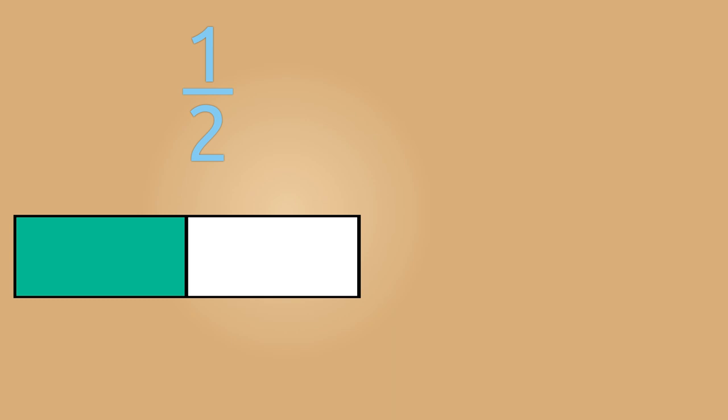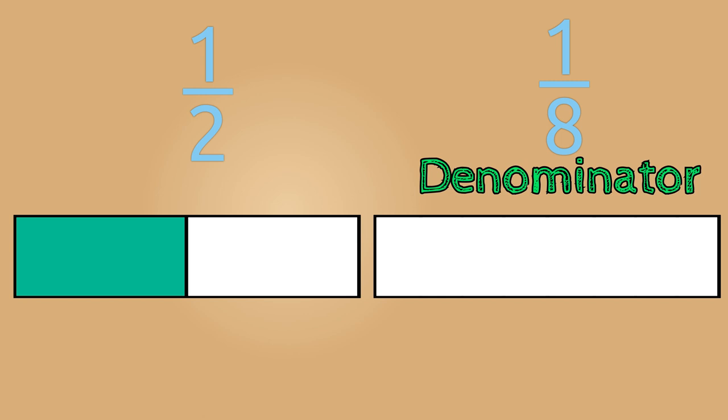So let's start off by taking your whole and partitioning it into two equal parts to represent 1 half. Now let's represent the fraction 1 eighth. Since our denominator is 8, we will partition our whole into 8 equal parts.